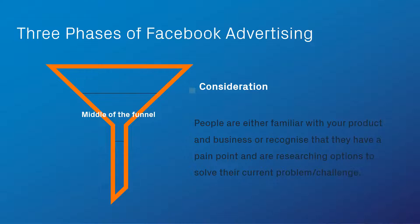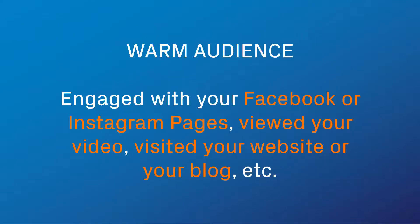In the consideration stage, people are familiar with your products or recognize they have a pain point and are searching for a solution. All the benefits you talk about in your posts, the testimonials you share — they help people with their research. These audiences are warm audiences: people who are engaged with your Facebook or Instagram page, watched your YouTube videos, or visited your website or blog. For ads, we use website visitors for retargeting — that's where retargeting comes from.